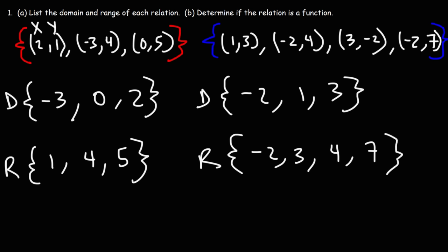That's how you write out the domain and range of each relation. Now, how can we determine if the relation is a function? In order for the relation to be a function, every input value must have only one output value. If an input value corresponds to two or more output values, that relation is not a function.